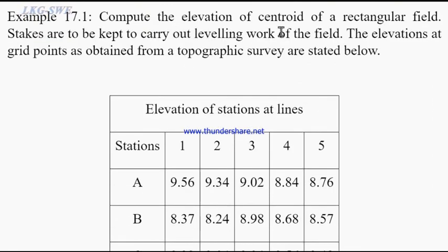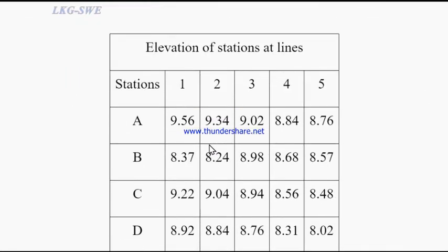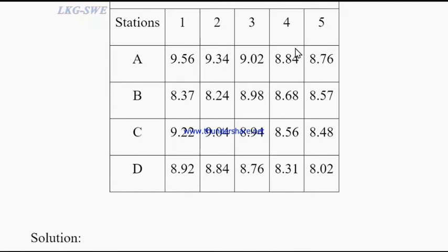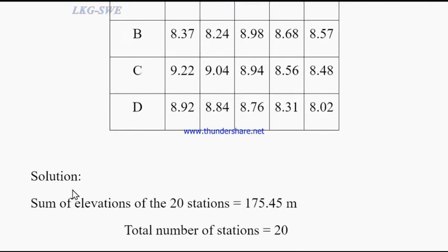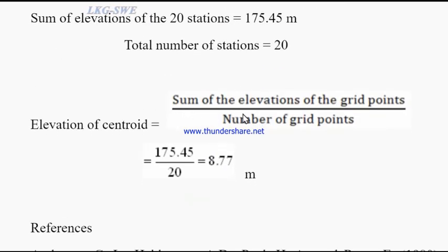For example, compute the elevation of the centroid of a rectangular field in order to carry out the leveling work. The elevation of the grid points as obtained from the topographic survey are stated. These are the different elevation points of the grid. The total elevation of all grid points is divided by the number of grid points — this gives the centroid elevation.